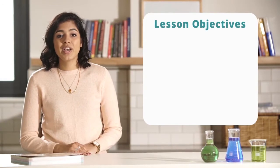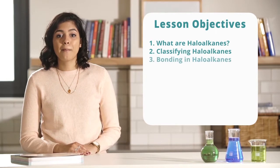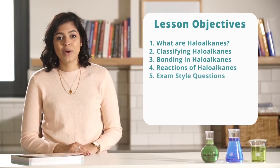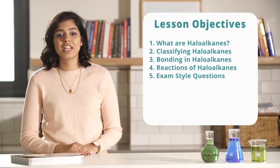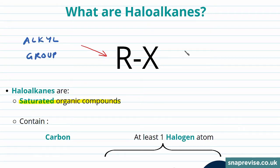Hi guys. In today's video we're going to take a look at what are haloalkanes, how we classify our haloalkanes, bonding in haloalkanes, the reactions of haloalkanes, an exam style question, and finally a summary. Well, haloalkanes are a saturated organic compound and they take a general formula of RX, where R is an alkyl group and X is a halogen atom.